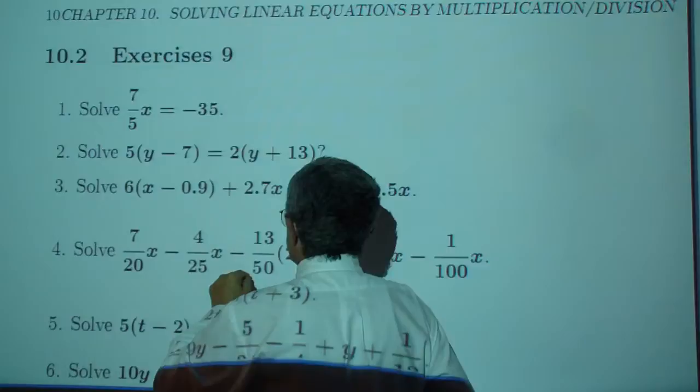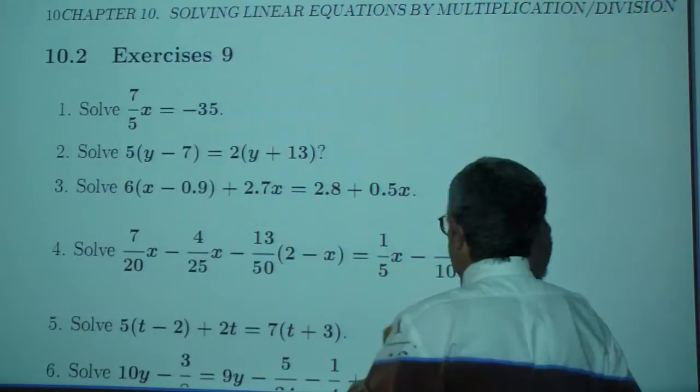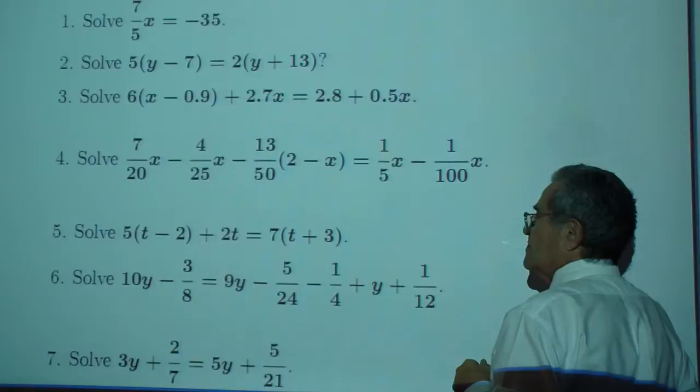Solve 7/20 x - 4/25 x - 12/50(2 - x) = 1/5 x - 1/100 x.